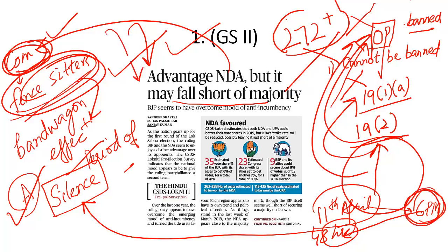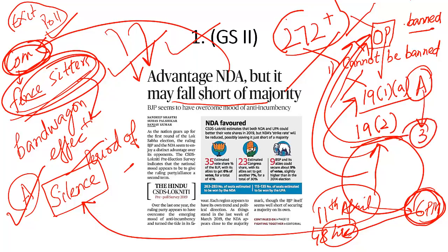There is also something called an exit poll. The difference between an exit poll and an opinion poll: an opinion poll asks people 'whom are you going to vote for?' — but this answer may change at the time of voting. Someone asked seven days before the election may say party A but then switch to party B. So opinion polls are not always accurate representations of what may lie in store at the time of election results.